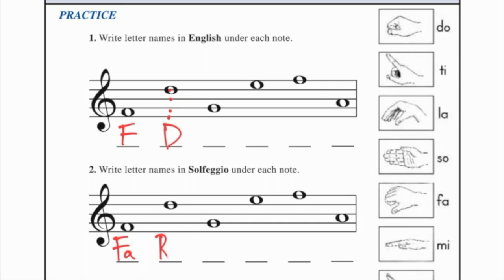The next example, second line, every good, the letter G, and G in solfeggio is SOL.